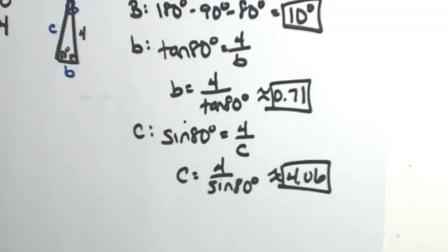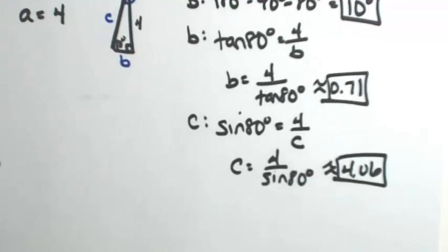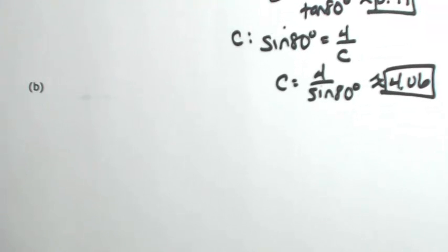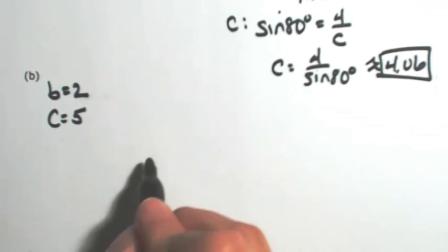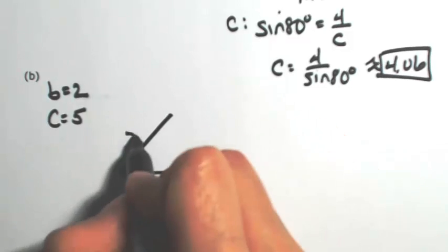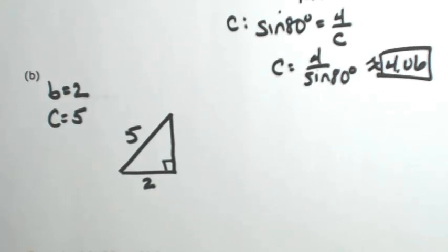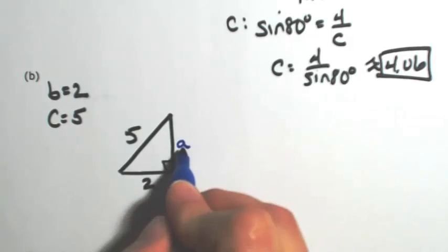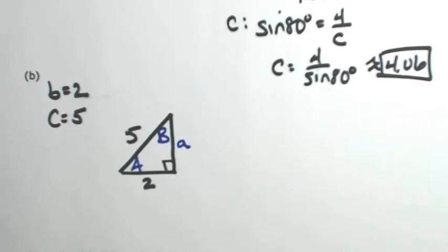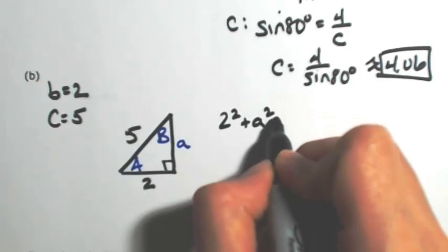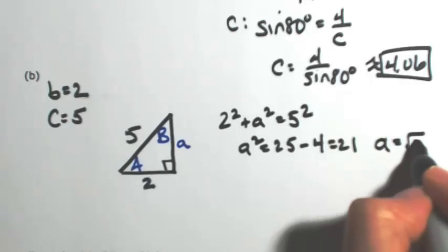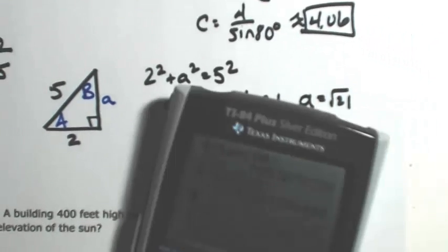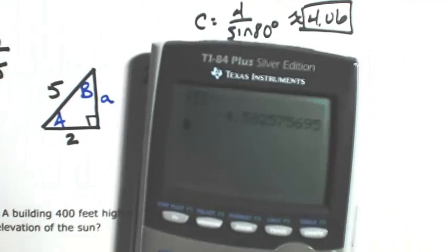I've successfully found all of the angles and sides. Let's try another one where I give you two sides and one angle. In this example, side b is 2 and side c is 5. In our picture, the bottom side is 2 and the hypotenuse is 5. We're told it's a right triangle, so we're missing side a, angle A, and angle B. Because I have two sides of a right triangle, I'll use the Pythagorean theorem: 2 squared plus a squared equals 5 squared, so a squared equals 25 minus 4, which is 21, and a equals the square root of 21, approximately 4.58.